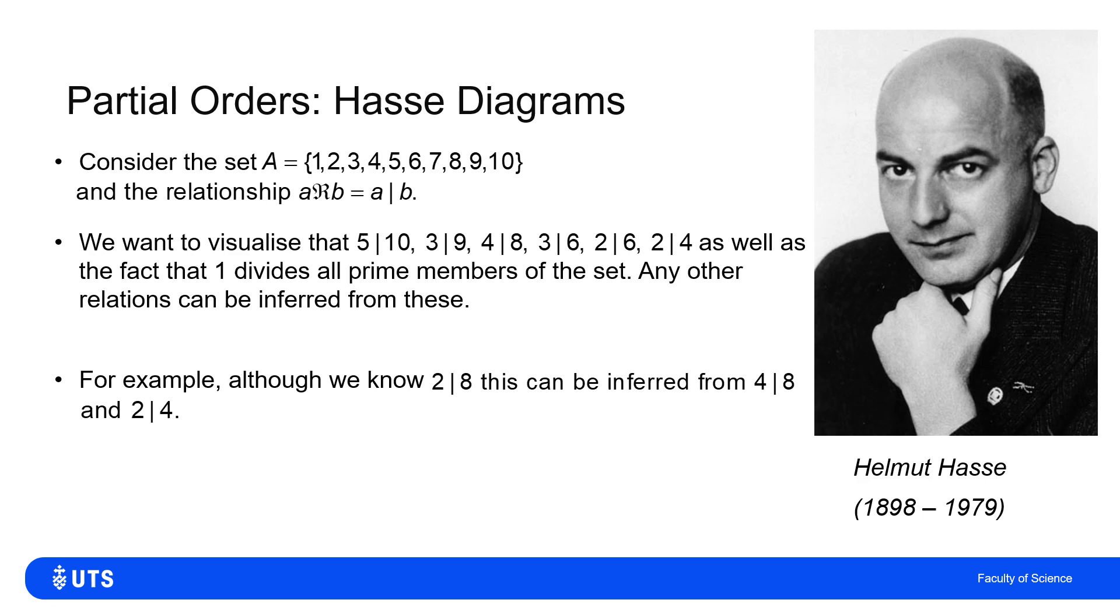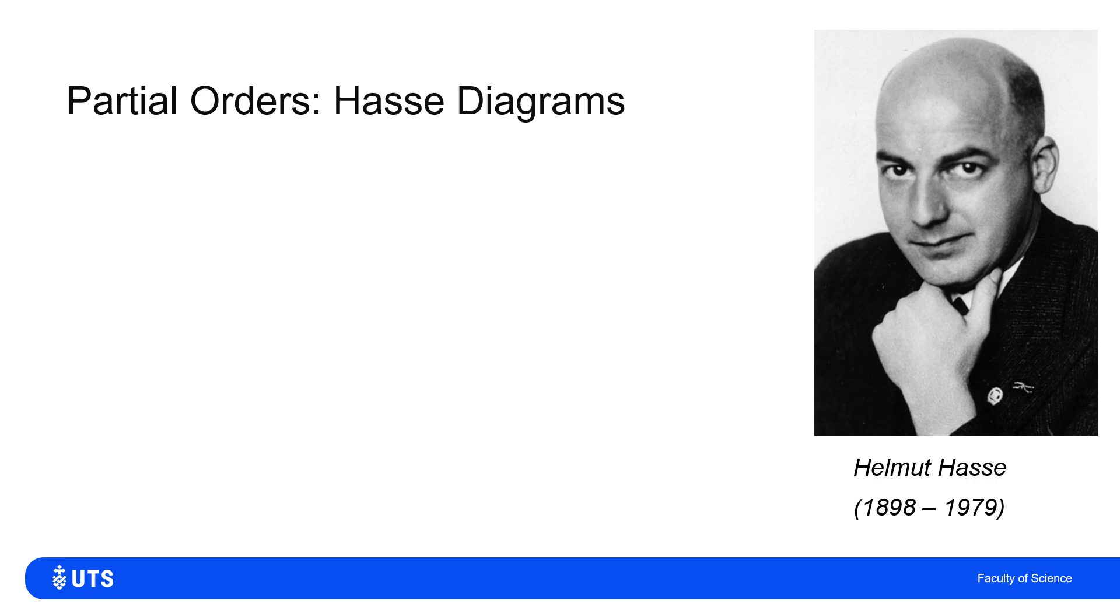Because if I know that 2 divides 4 and 4 divides 8, the fact that visualizing a partial order tells me that 2 divides 8. So I can see that from the Hasse diagram. So what does the Hasse diagram look like for this first 10 positive integers where the relation is divisibility?